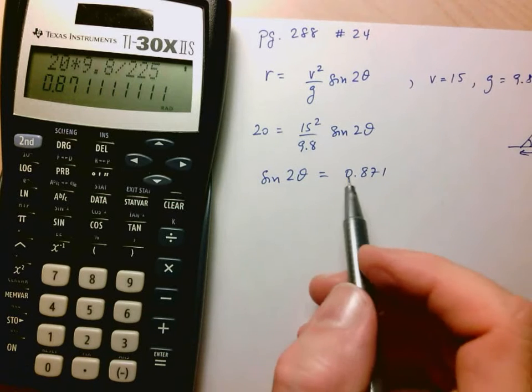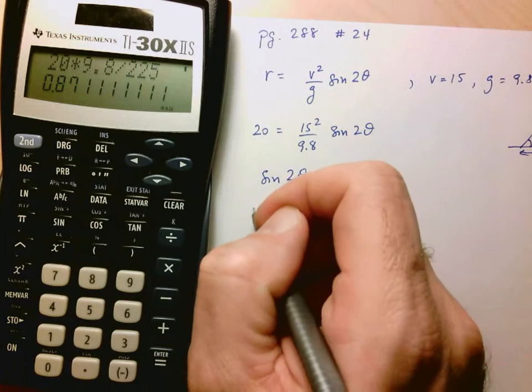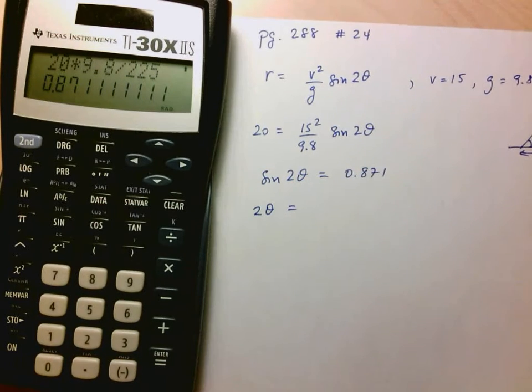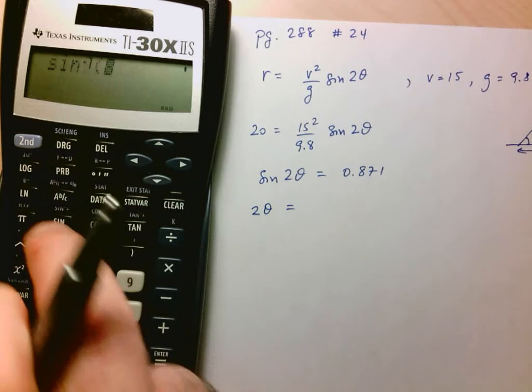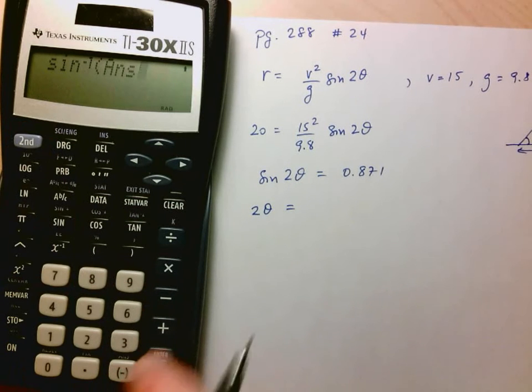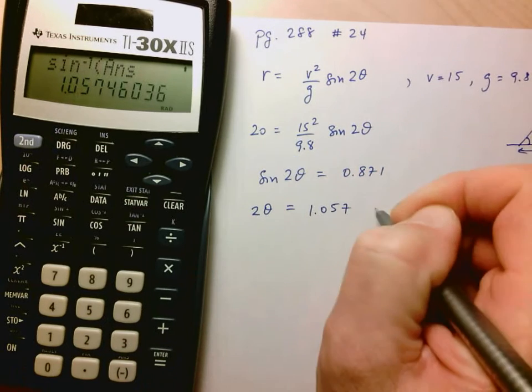Now, 0.871 doesn't correspond to a special angle, so we're going to determine what 2 theta can be equal to using our inverse sine button, at least the first one. Inverse sine of that answer gives us 1.057.